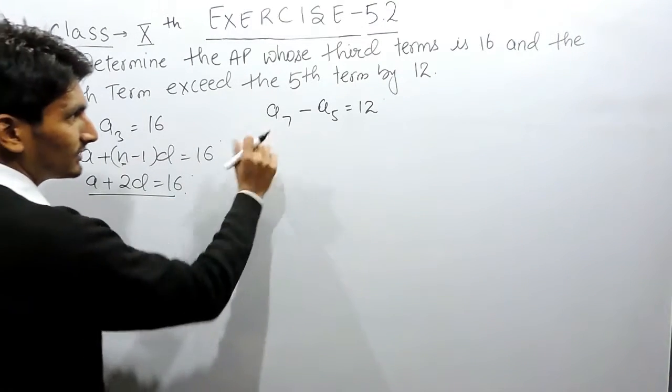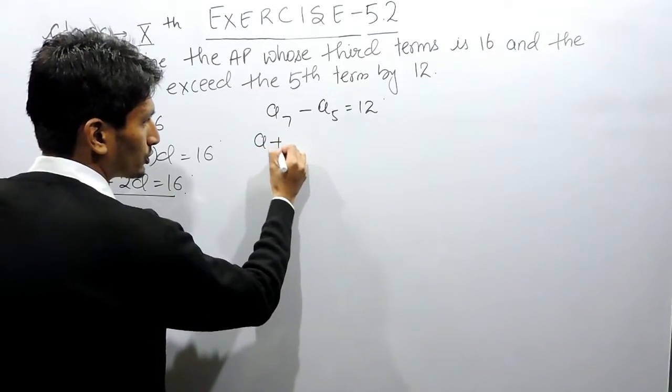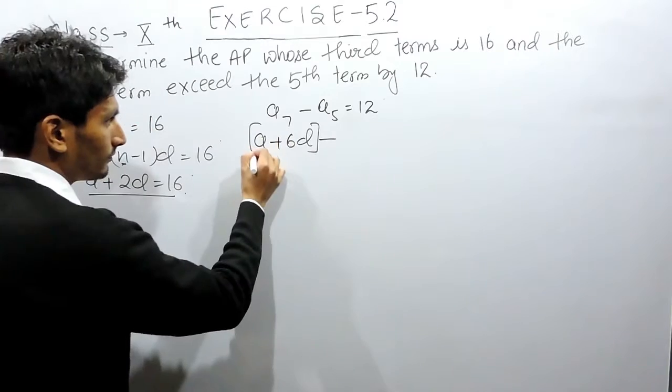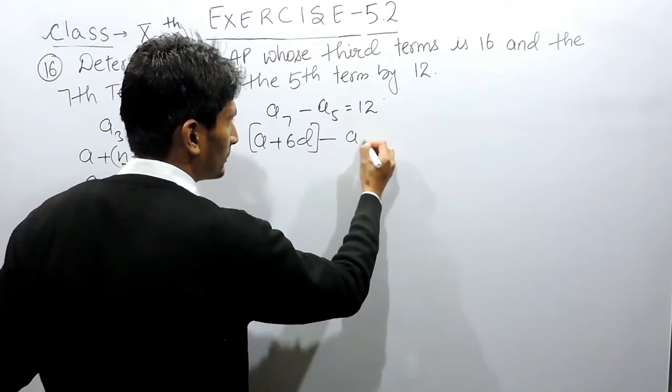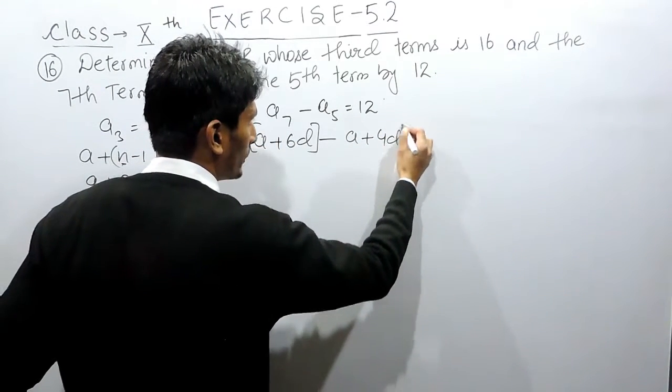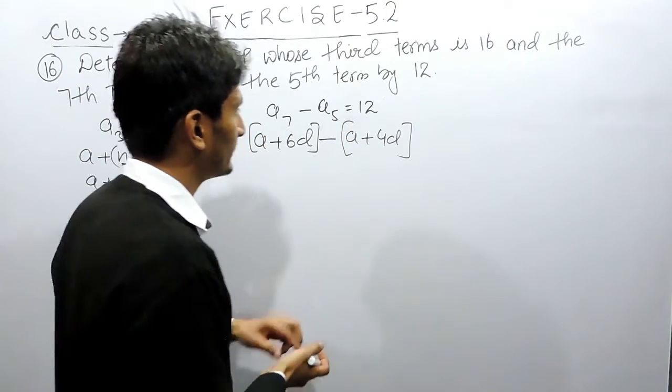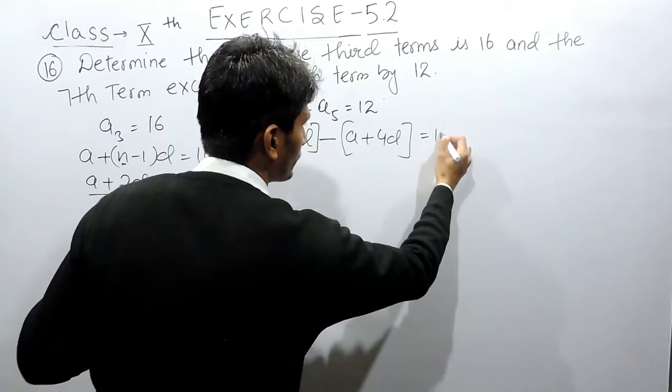Similarly, the seventh term should be equal to A plus 6D minus the fifth term, which must be equal to A plus 4D. I have used the same formula to figure the fifth and the seventh term, and this is equal to 12.